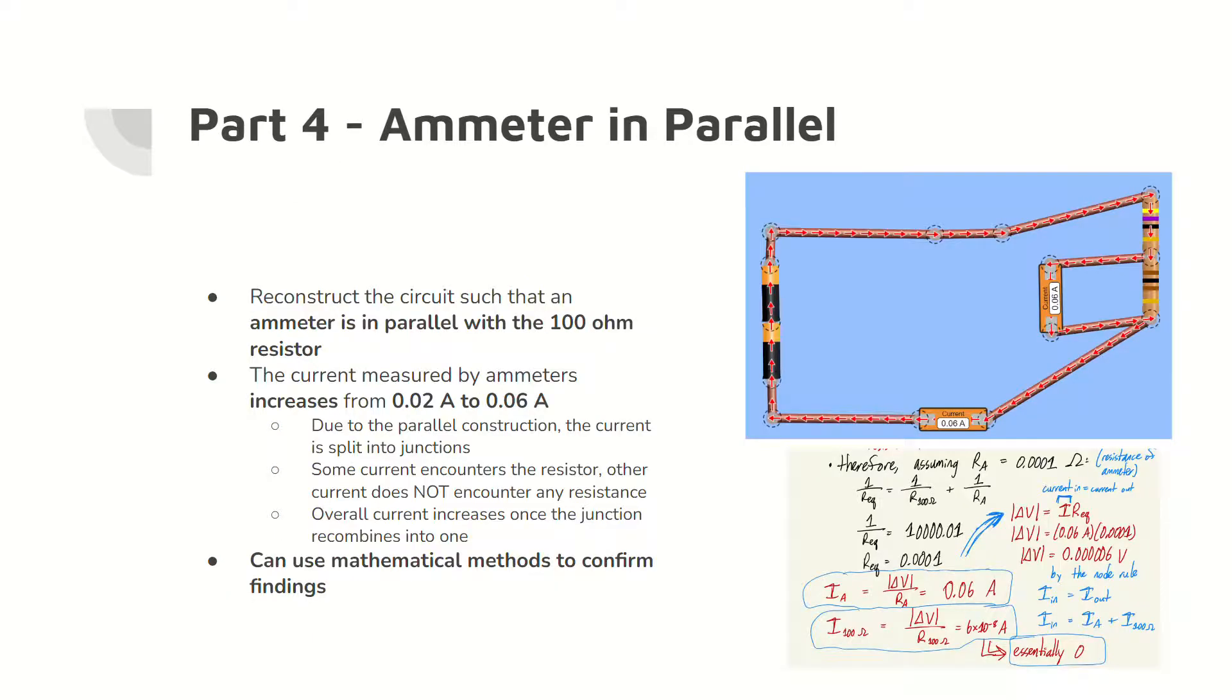In part four, the same circuit is reconstructed such that an ammeter is parallel to the 100 ohm resistor. The resulting current is greater than the current from the original circuit because the resulting junction allows for more current to bypass the resistor, allowing for the overall current to increase.